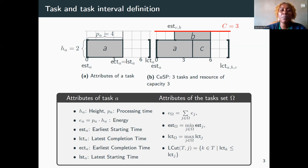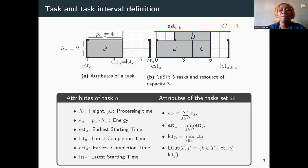A sample cumulative scheduling problem is given in Figure B. Here, three tasks A, B, and C share a resource of capacity three. The global constraint cumulative is used to solve cumulative scheduling problems.